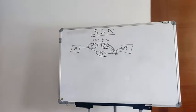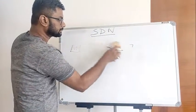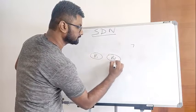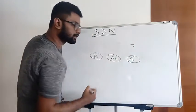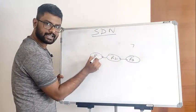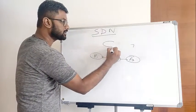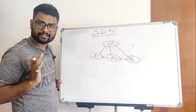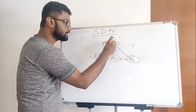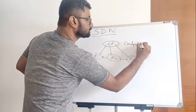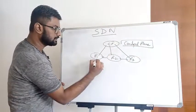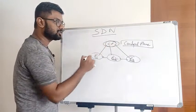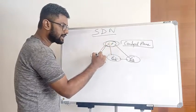In SDN, we have the same network — router one, router two, router three — but this time, instead of each router using its own brain to process information, we introduce one thing called the control plane. The control plane acts as the boss: you will not decide which router to forward information to — that will be decided by me, the control plane.